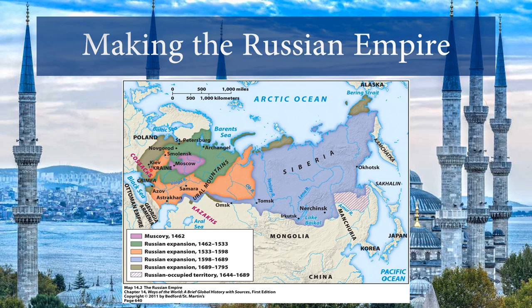Russia expanded west, bringing in different Slavic-speaking, ethnically Russian areas. Then they conquered south — the primary reason being security. This was the area of their enemies, where steppe nomads had been terrorizing them for so long. They're conquering into that region so that they can have security.